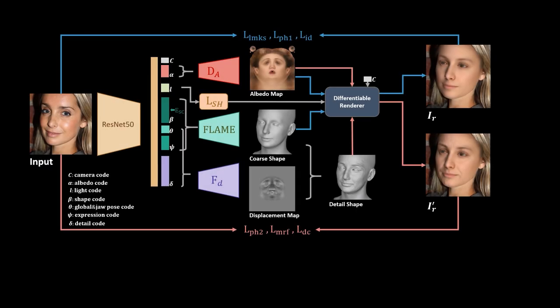DECA is built using an encoder-decoder architecture. The input image is regressed to several parameters corresponding to albedo, lighting, geometry, and our novel expression-conditioned detailed displacements.